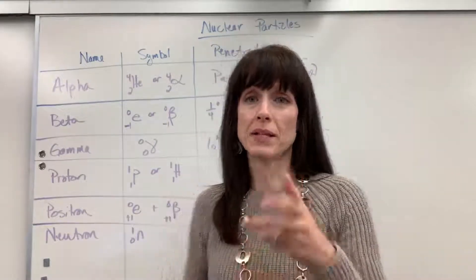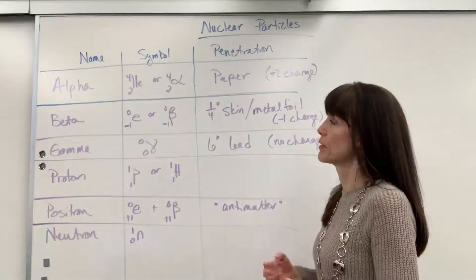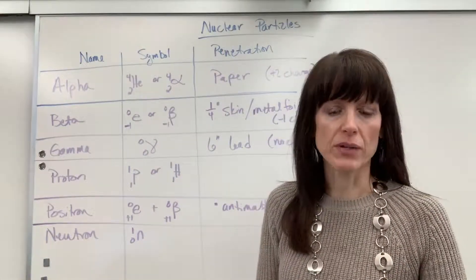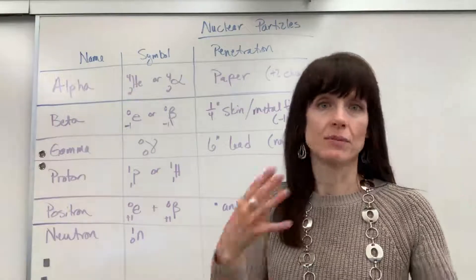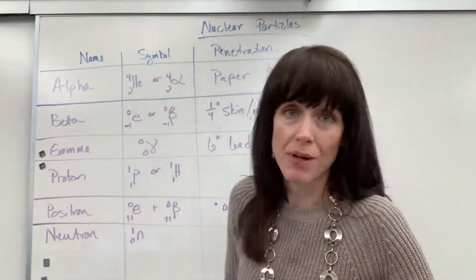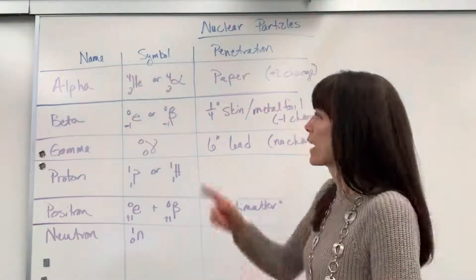And so its penetration is stopped by a piece of paper. We have a fair amount of alpha radiation around us. If you have ever been around granite countertops, those emit all kinds of alpha radiation. I'll put a piece of paper on top of that countertop, though, and the alpha particles can't go through it.